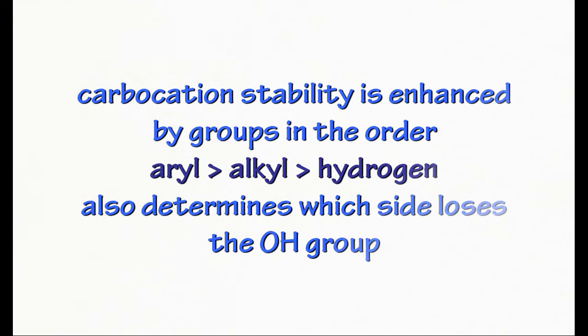Now let's see what happens with unsymmetrical diols on treatment with an acid. In case of unsymmetrical diols, the migratory aptitude of some groups comes into play. This order determines which side loses the hydroxyl group. This order also enhances the carbocation stability. Once the hydroxyl group is gone, the migrating group is determined.